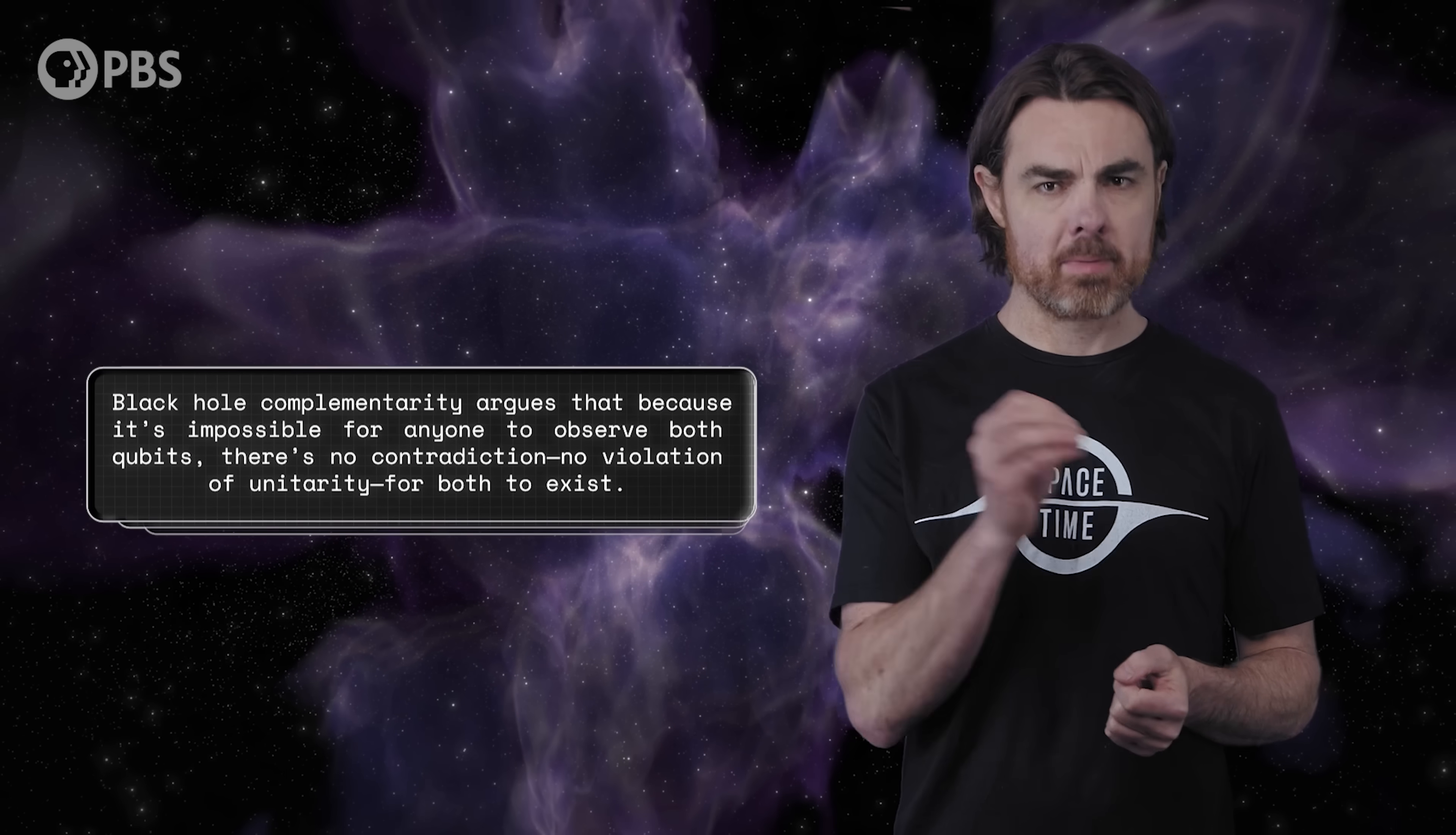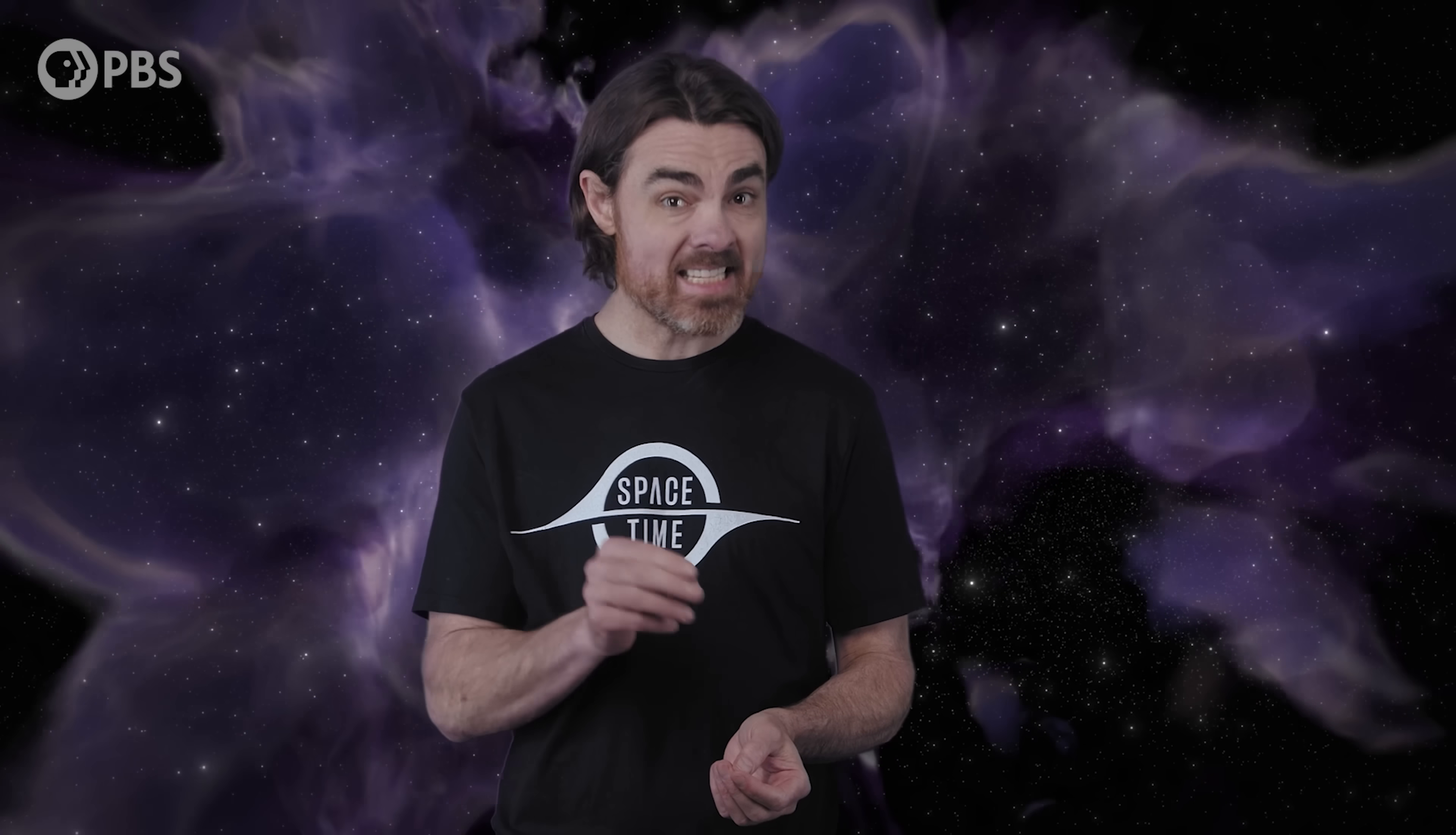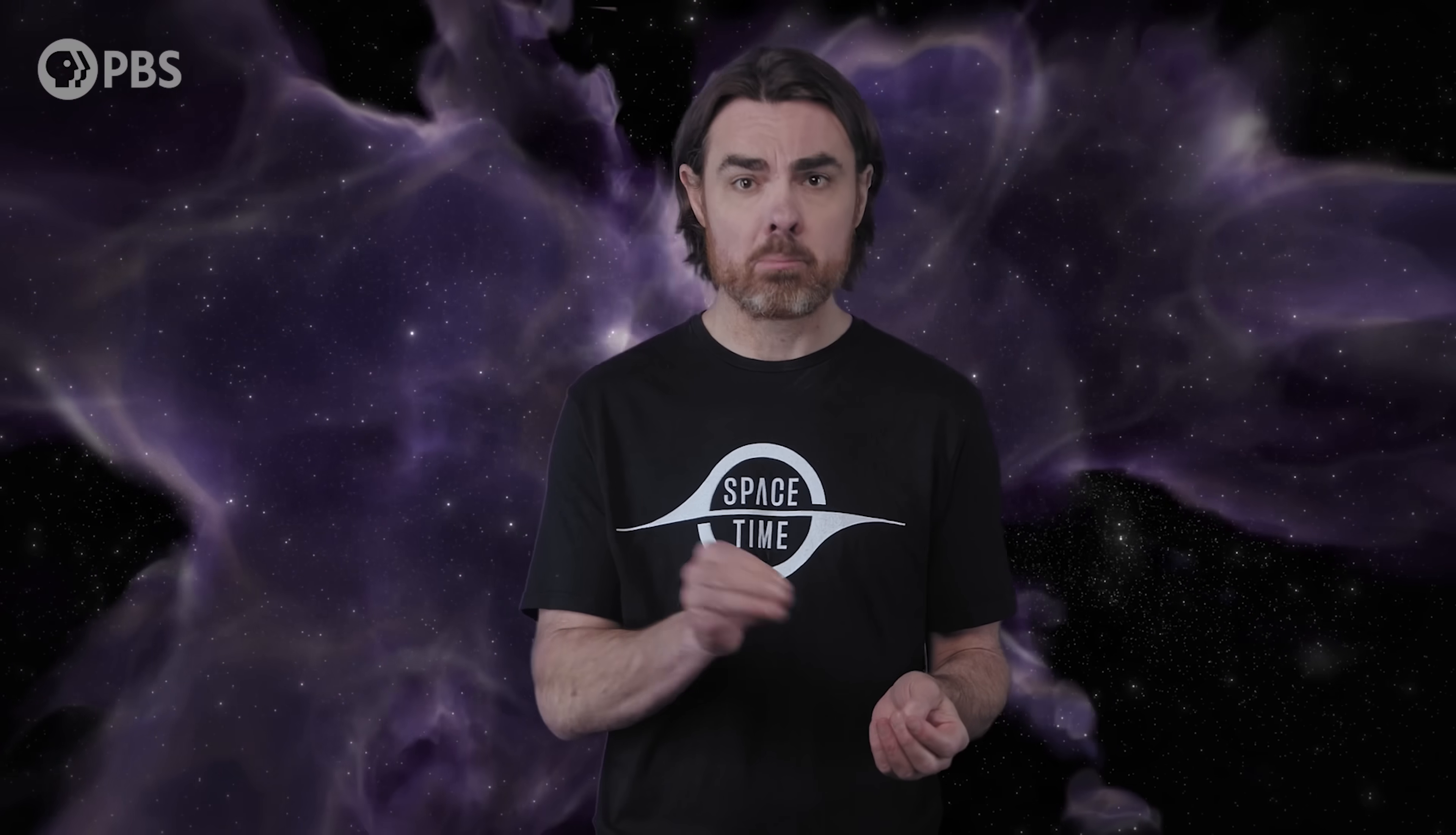So it seems that nature is working awfully hard to make it impossible for anyone to see both versions of the qubit. So maybe the unobservability of the cloned qubits is telling us something fundamental? That would be the argument of black hole complementarity, which states that because it's impossible for anyone to observe both qubits, there's no contradiction, no violation of unitarity, for both to exist. This sounds like some sort of weird quantum stuff. And complementarity is indeed fundamental to quantum mechanics.